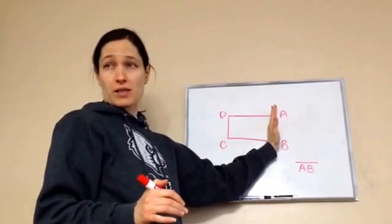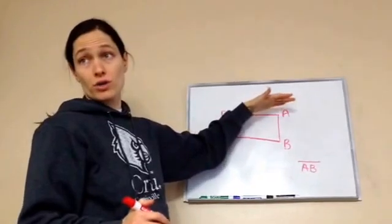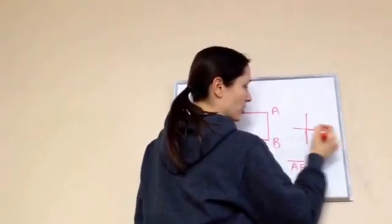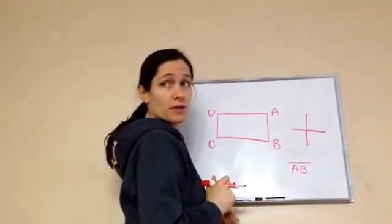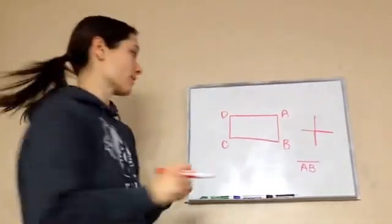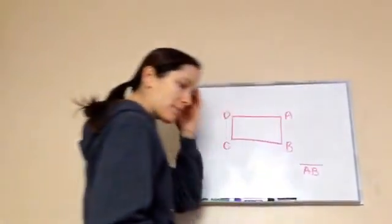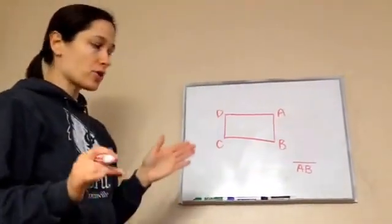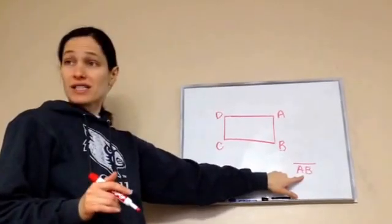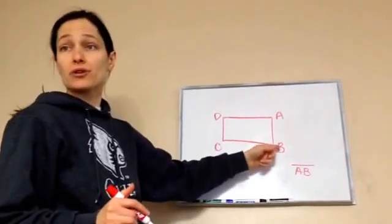Do you remember what perpendicular means? It makes a square corner. So this would be perpendicular — when two lines make a square corner, it's called perpendicular. So let's identify what A-B is. This is segment A-B. What is perpendicular to that?